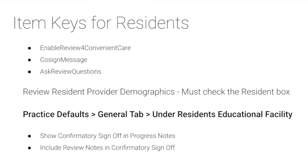My first screen shows when it is a resident, and the co-sign feature does need to have three item keys to be turned on, and I have listed them here. The provider must be listed as a provider, and then there's a checkbox that needs to be checked off. The third setup piece is under practice defaults, the general tab, and it's under the resident's educational facility. You need to check off two options: show confirmatory sign-off and include review confirmatory sign-off.